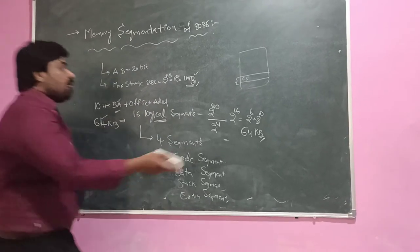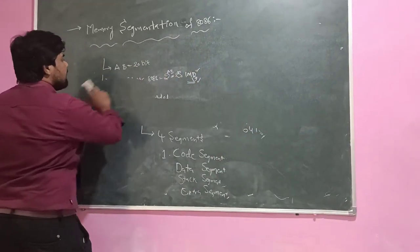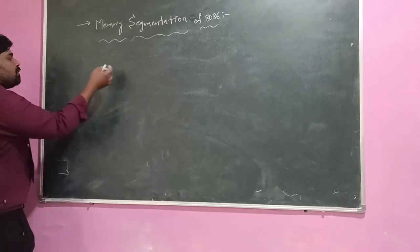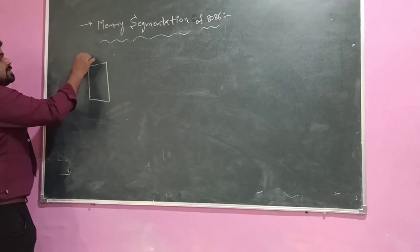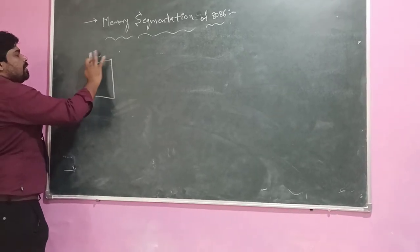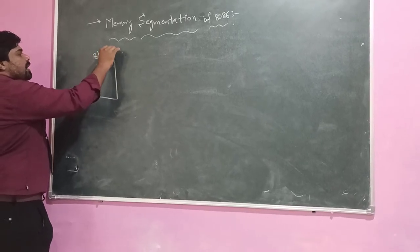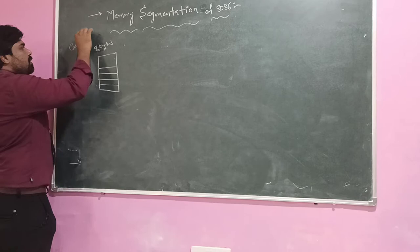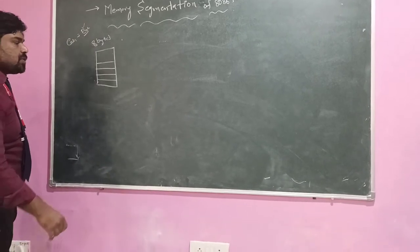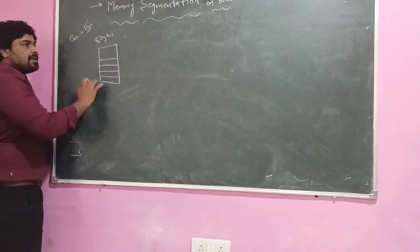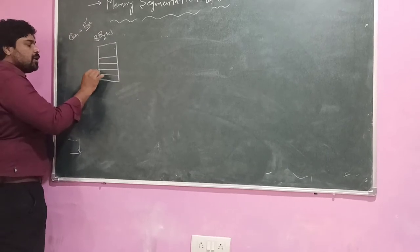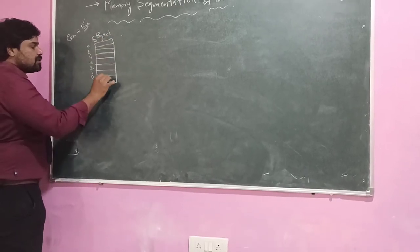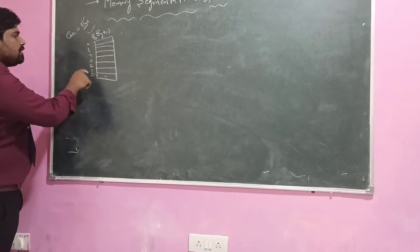Logical means we can define the segment anywhere in the 1MB memory. That is the difference between logical and physical segments. Physical segment means we are fixing the memory location allocated for that segment. Before doing the segmentation for 1MB memory, we need to calculate the starting address and ending address. For a simple example, suppose I am taking a memory device which consists of 8 bytes of data.